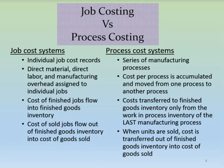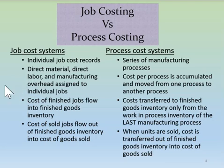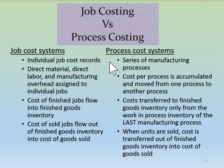A job cost system has the following characteristics: the work in process inventory control account is supported by individual job cost records for each job. Direct materials, direct labor, and manufacturing overhead are assigned to individual jobs. When the job is finished, those costs flow directly into finished goods inventory, and when the job is sold, the cost flows out of finished goods inventory and into cost of goods sold.